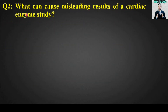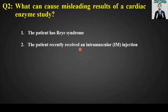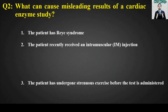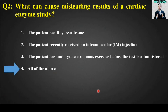MCQ number two: What can cause misleading results of a cardiac enzyme study? Options are: the patient has Reye's syndrome; the patient recently received an intramuscular injection; the patient has undergone strenuous exercise before the test is administered; all of the above. The right answer is option number four — all of the above.